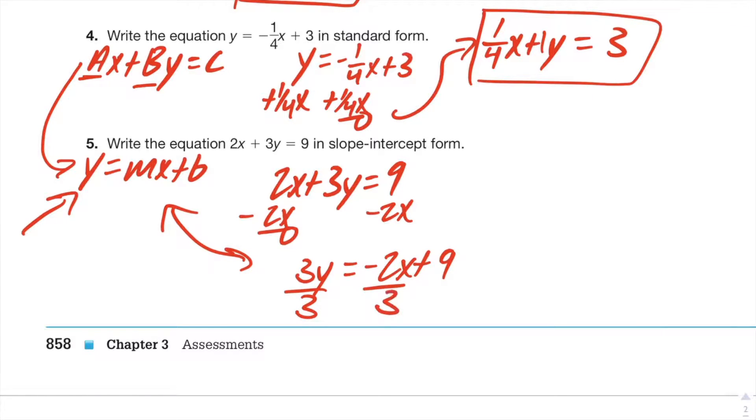What you do to one side you do to the other. Cancel. You're going to get y = -2/3x + 3. Three goes into nine how many times? Three times. And now there we go, slope-intercept form.